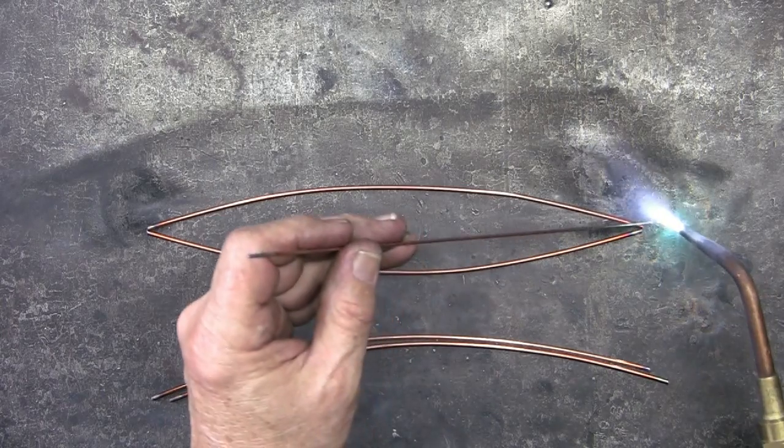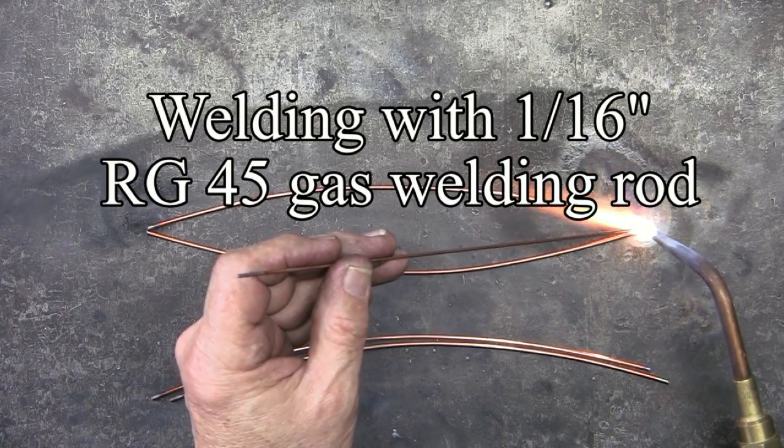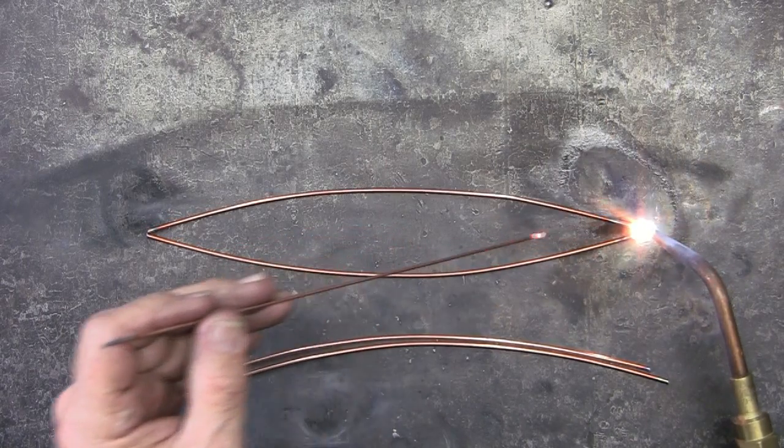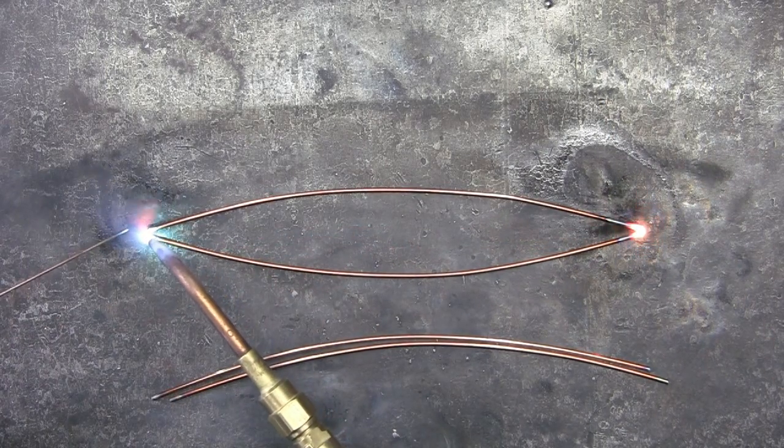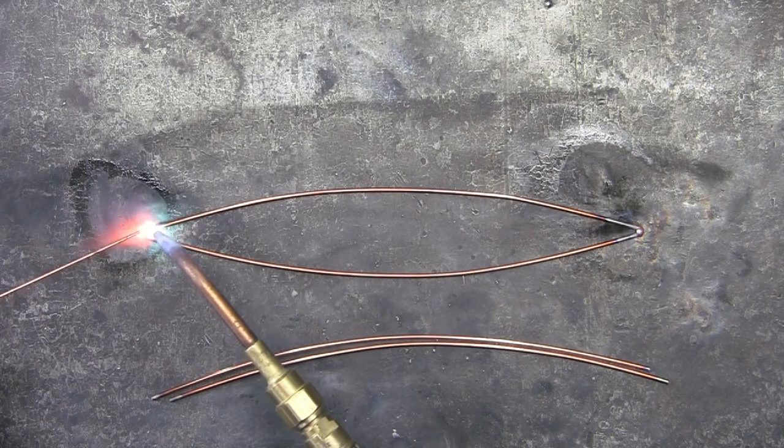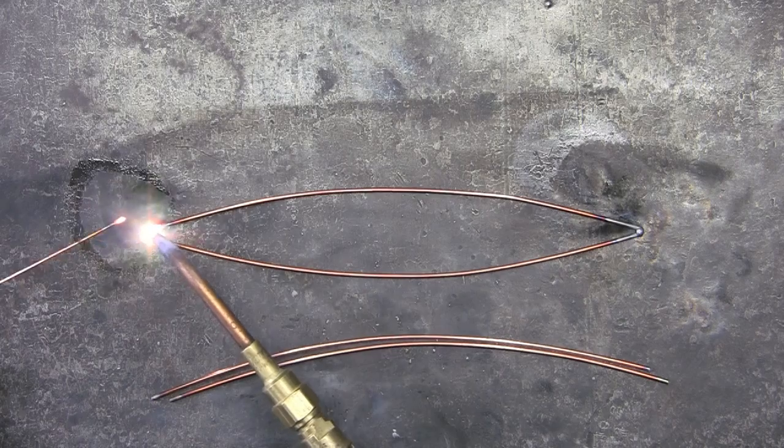I have cut the rods apart where I had fused them together. And now I am using a 1/16th inch RG45 to gas weld the ends of the deck together. This is for the right and left side or the port and starboard side of the kayak.